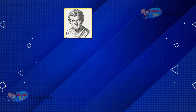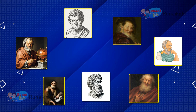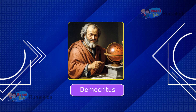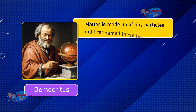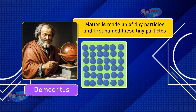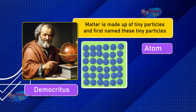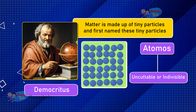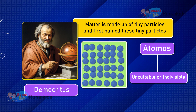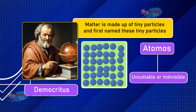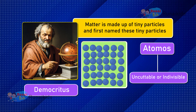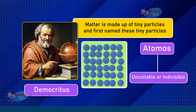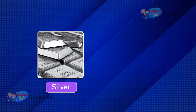Now the question is: what is matter made up of? Several philosophers tried to describe the constituents of matter, but the name of Democritus came to light first. He said matter is made up of tiny particles, and he named these tiny particles 'atomos,' meaning uncuttable or indivisible. He also said that these tiny particles are specific to the materials they make up — for example, silver is made up of silver particles, different from gold particles.